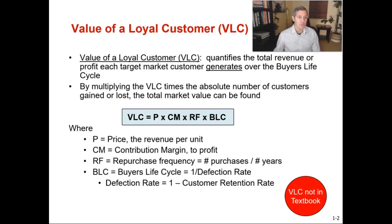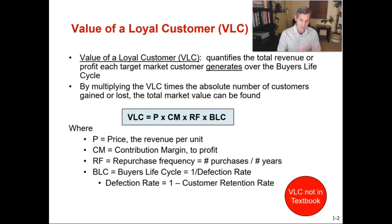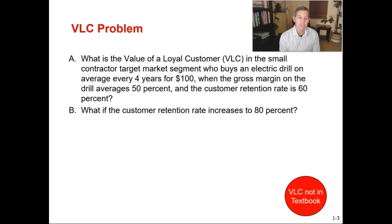The formula for value of a loyal customer uses: P (price — revenue per unit), CM (contribution margin to profit per unit), RF (repurchase frequency — number of purchases divided by number of years, so buying one every four years = 0.25 RF), and the buyer's life cycle. The buyer's life cycle equals one divided by the defection rate, and the defection rate equals one minus the customer retention rate.